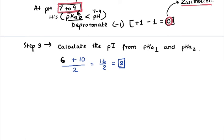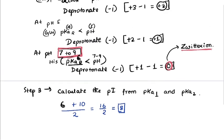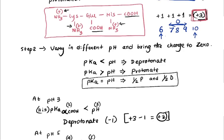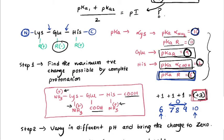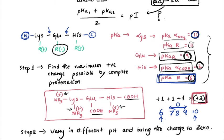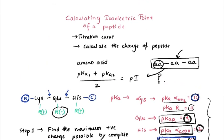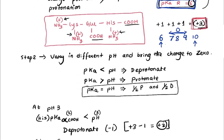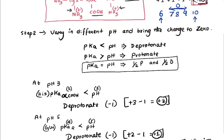This is how you calculate the pI or isoelectric point of a peptide. I showed a tripeptide here, but the same method applies to tetrapeptides, pentapeptides, and so on. If you found this helpful, please give a thumbs up and share the video. Thanks, and until next time.